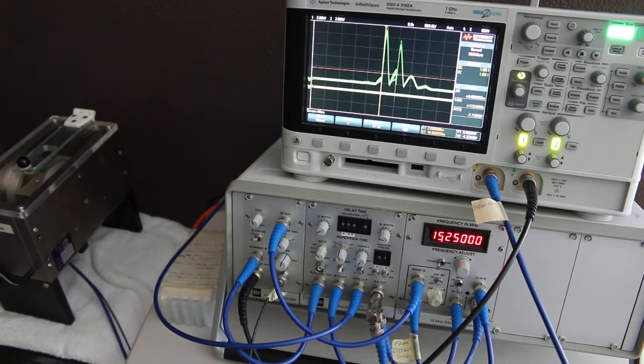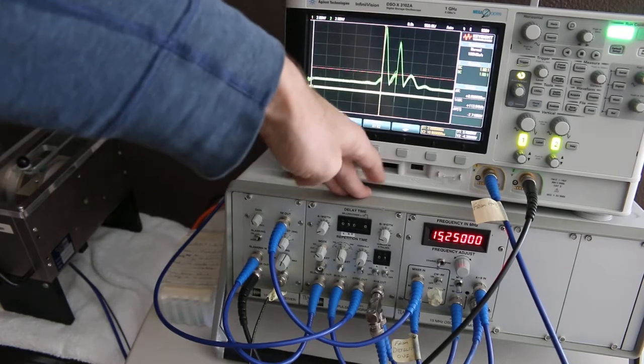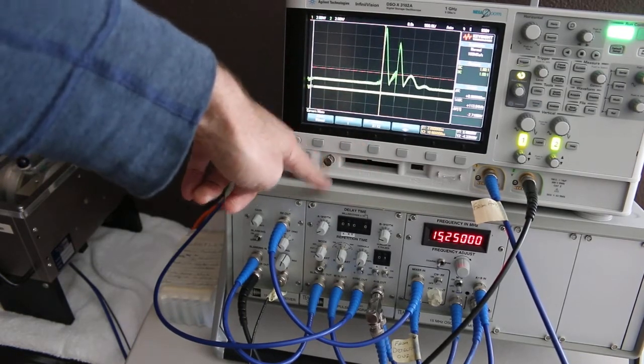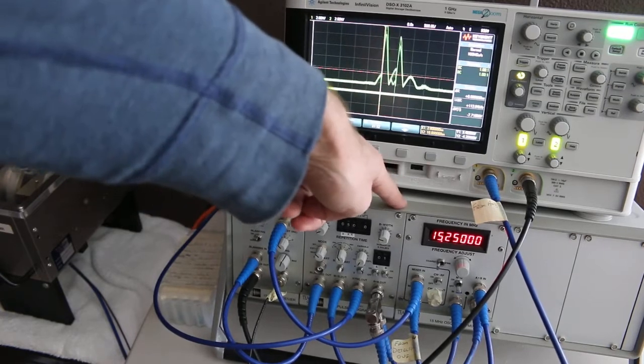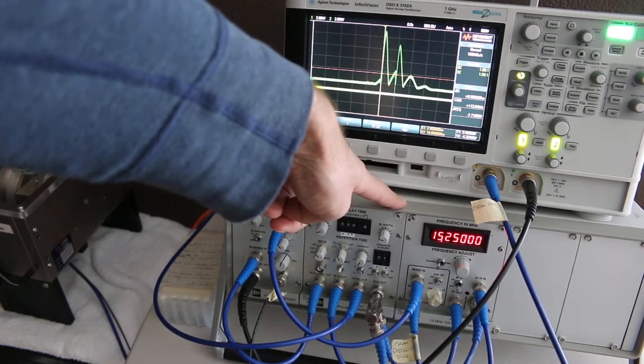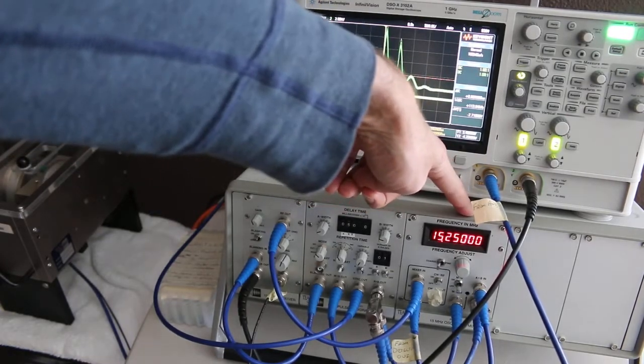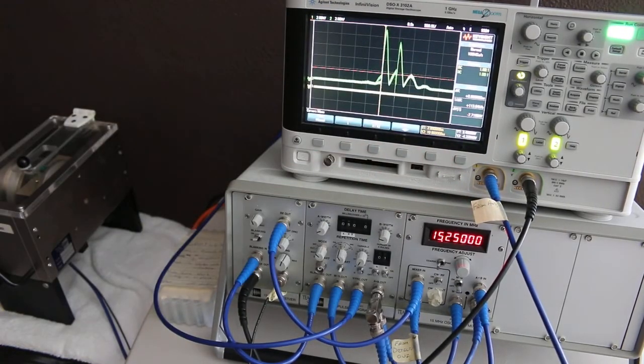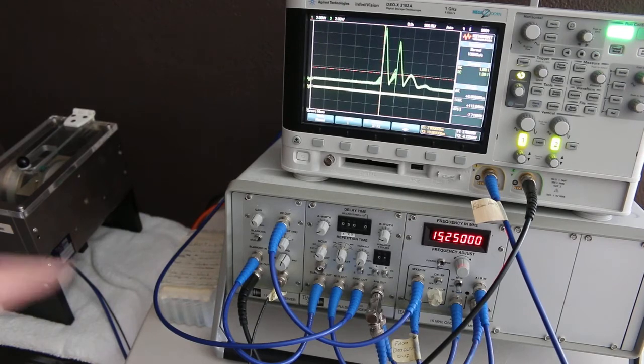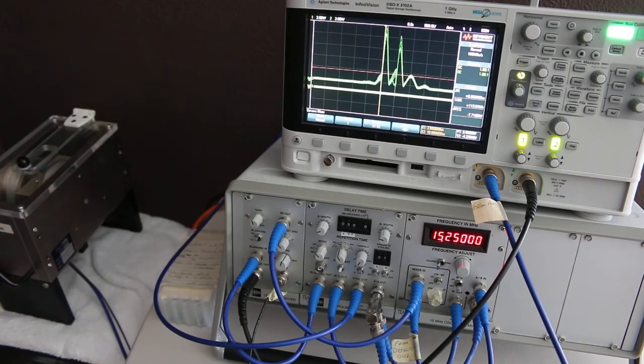But essentially, it's a pulse programmer that, as the name implies, allows you to sort of program a sequence of pulses that will come out of this unit. Again, it'll always start with one A pulse, and then you can have from one or more B pulses coming out. And what the pulses will do, they connect directly over here to the frequency generator that tells the frequency generator when to turn on the RF at the frequency as advertised.